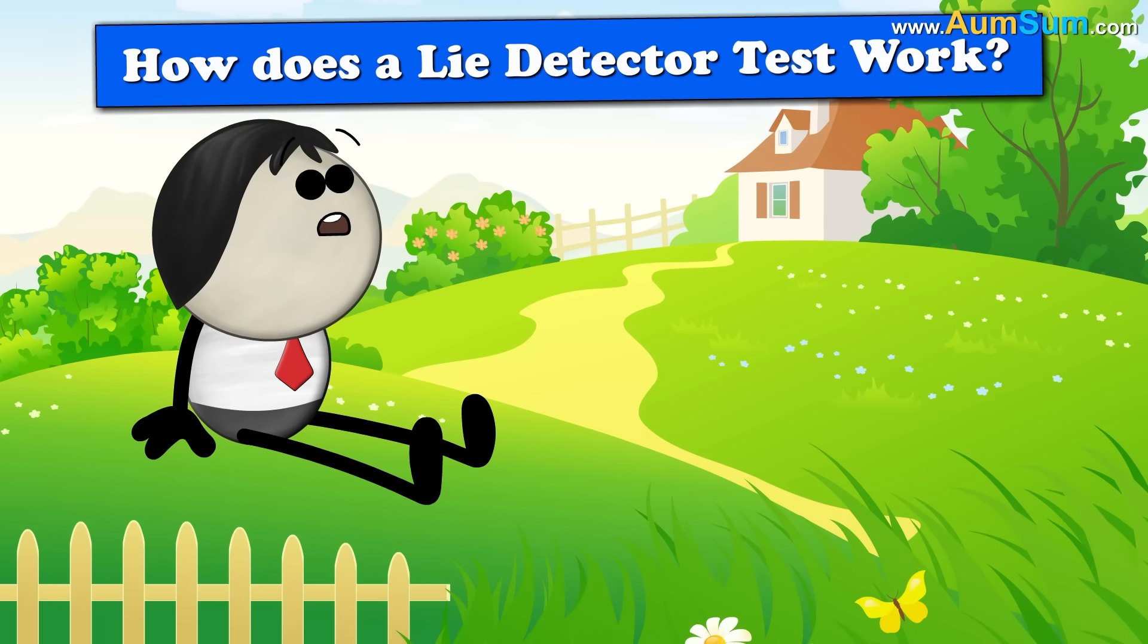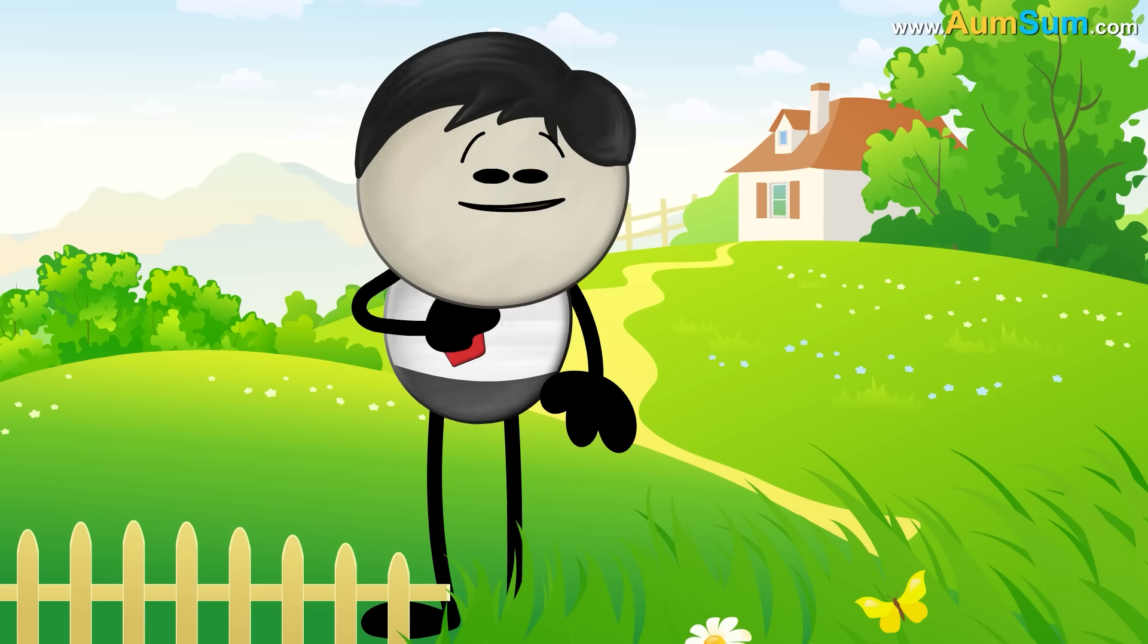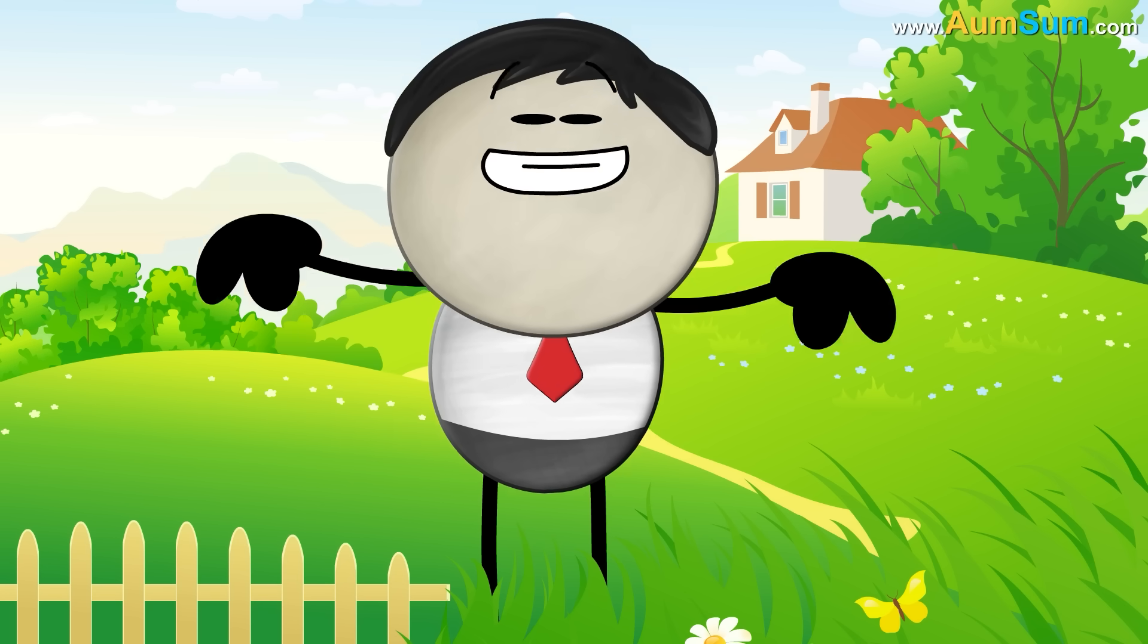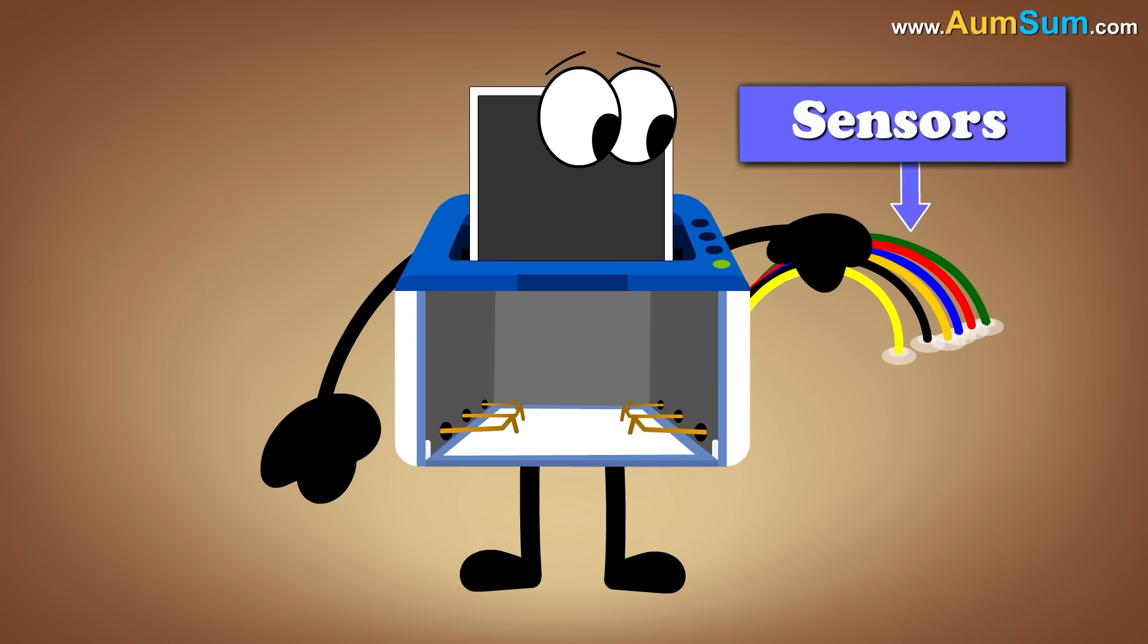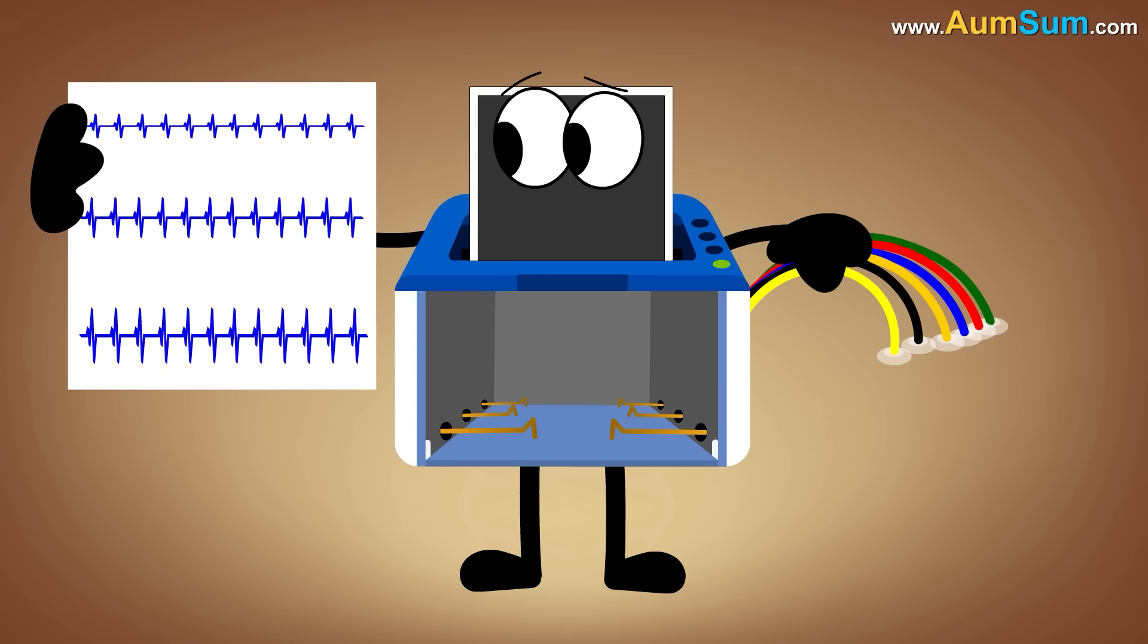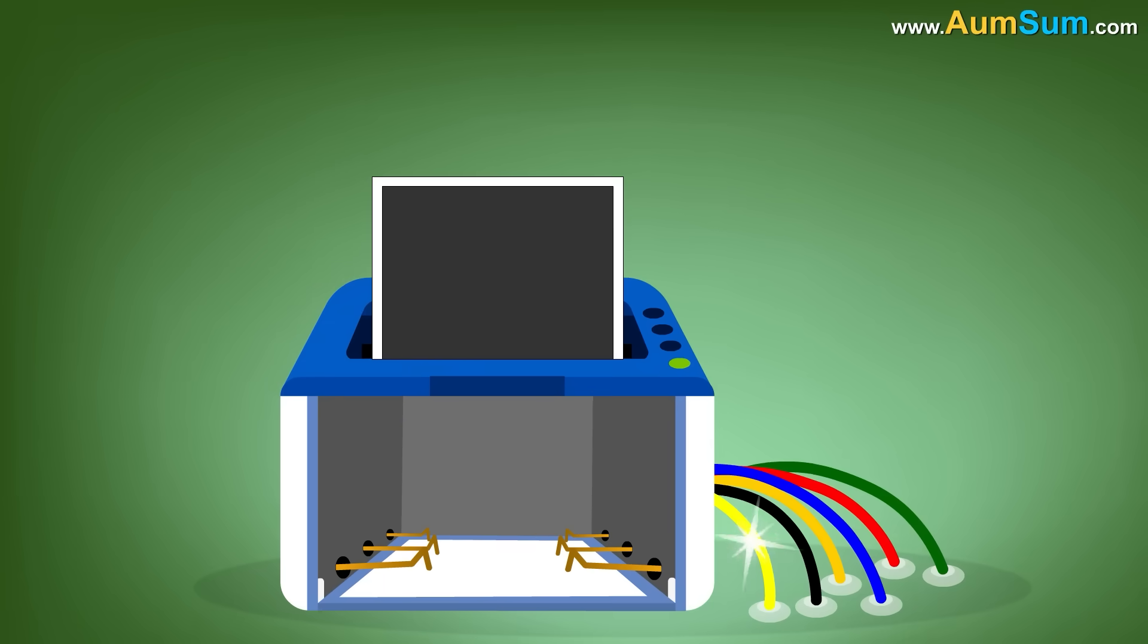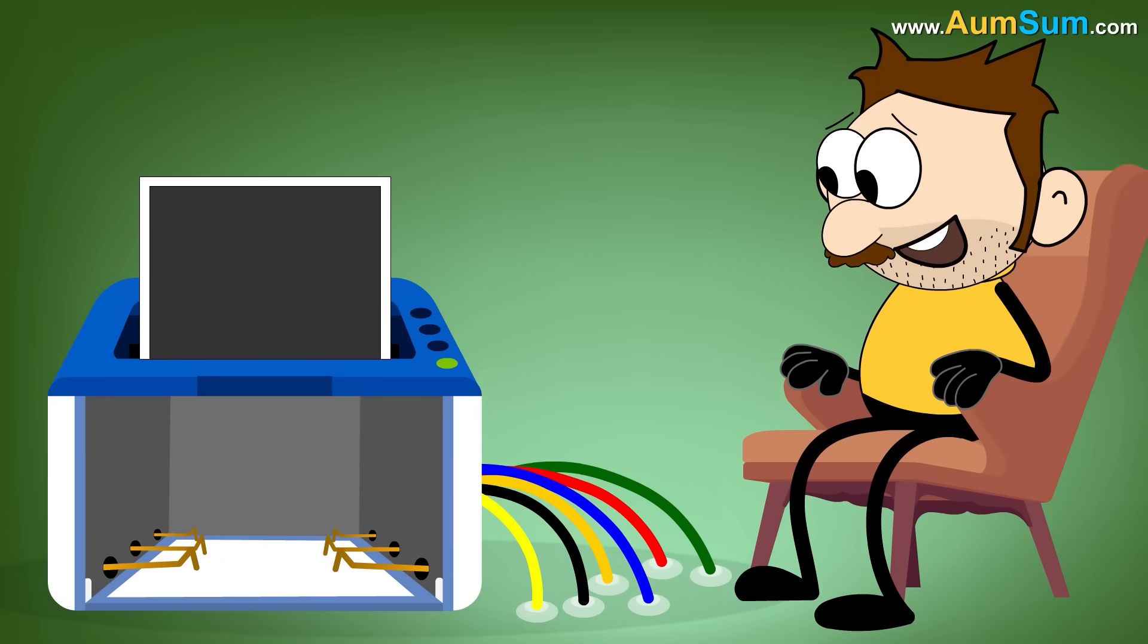How does a lie detector test work? Simple. AumSum taught it how to catch a lie. A polygraph machine consists of multiple sensors whose response is recorded in the form of a graph on a single strip of paper. These sensors are attached to the person taking the lie detector test.